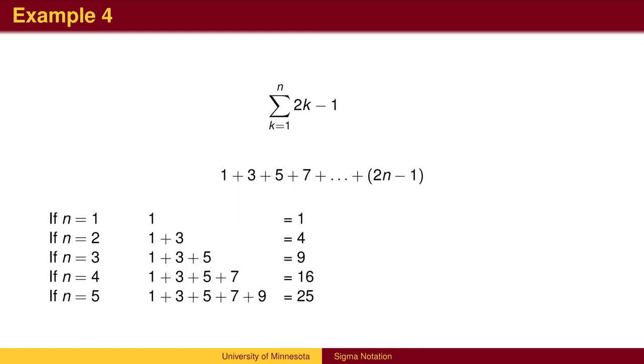For example, if n is 4, then we add up the numbers 1, 3, 5, and 7 to get 16. You may have noticed that the answer is always n squared. In general, it may be hard to find a pattern, and even harder to prove that the pattern is correct.